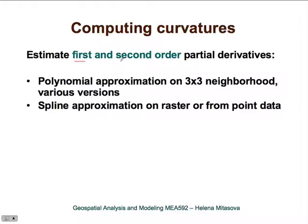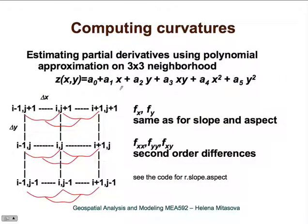To compute curvatures, we need first and second order partial derivatives. We can use polynomial approximation over a 3×3 neighborhood of each point. For the second order derivative, we are essentially computing differences of differences—computing differences between elevations and then differences of those two differences—and then combining the first and second order partial derivatives to compute curvature based on the equations shown.